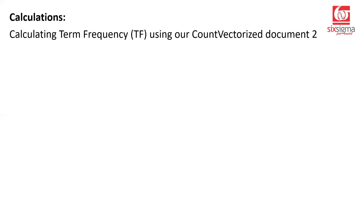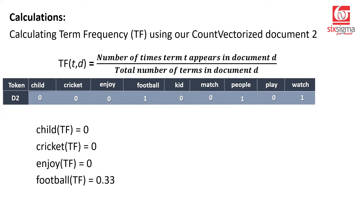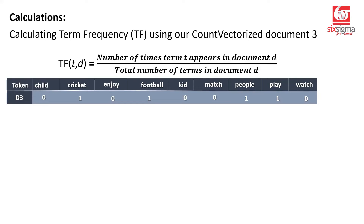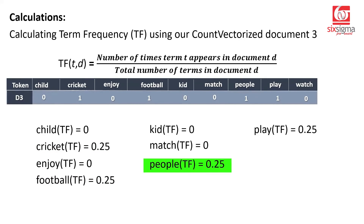For D3, 'people play cricket and football,' we have four total words. Child is zero, but cricket, football, people, and play are each 1/4 = 0.25. Watch is zero. For D4, 'kids enjoy watching cricket match and football match,' the total is seven words. Cricket, enjoy, football, and kid are each 1/7 ≈ 0.142. Match appears twice, so its TF = 2/7 ≈ 0.285. People, play are zero, and watch is 0.142.